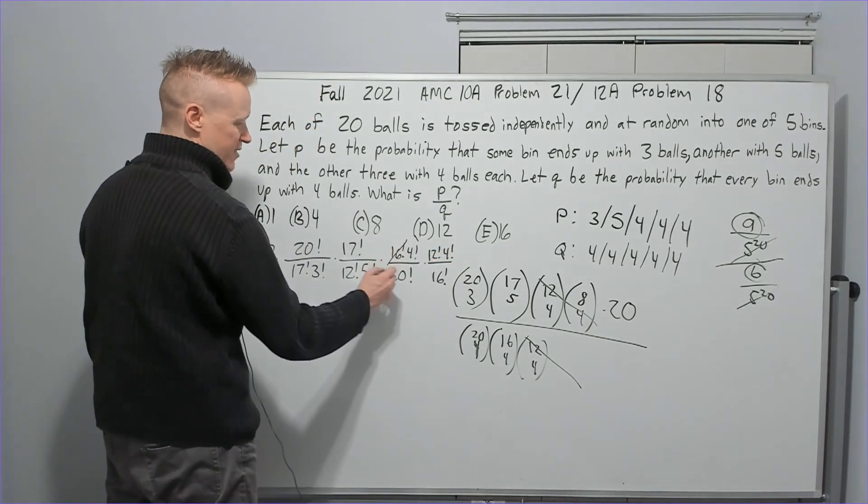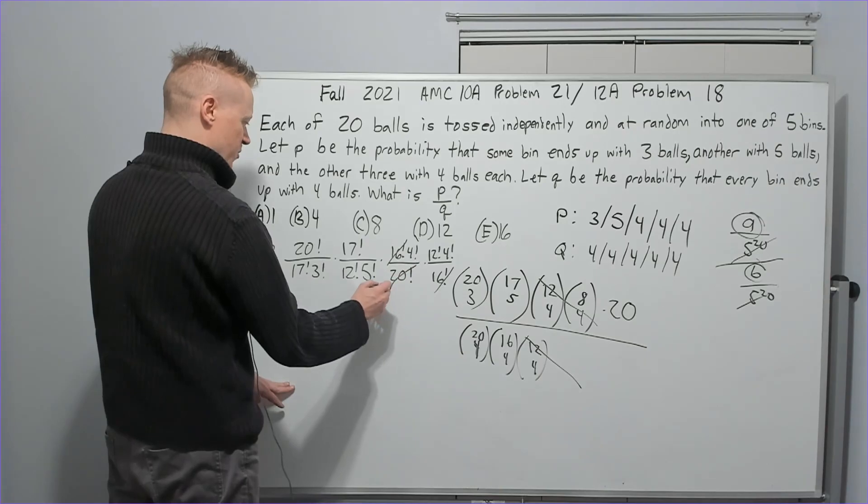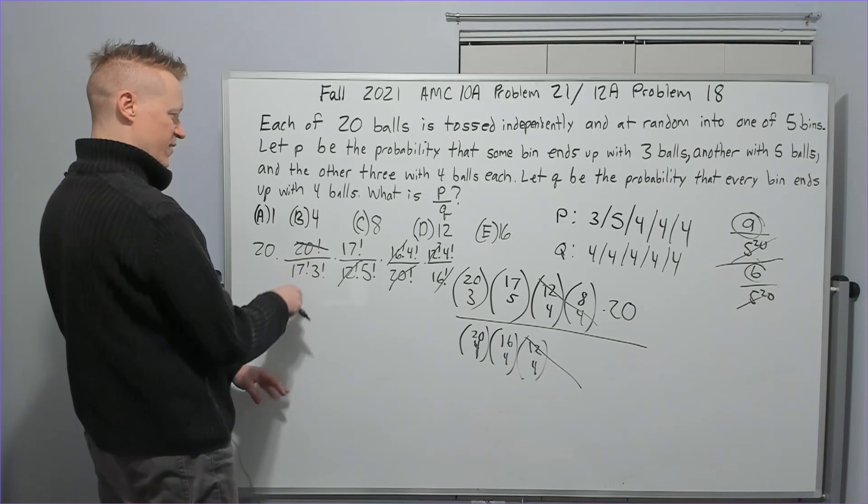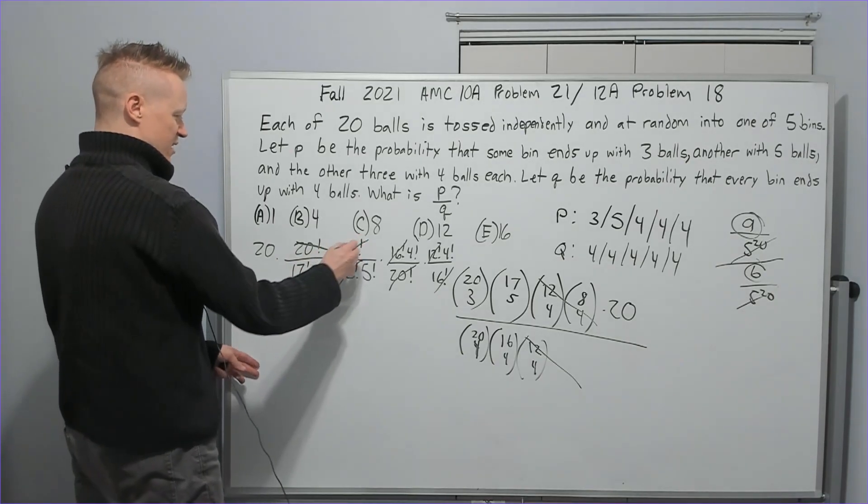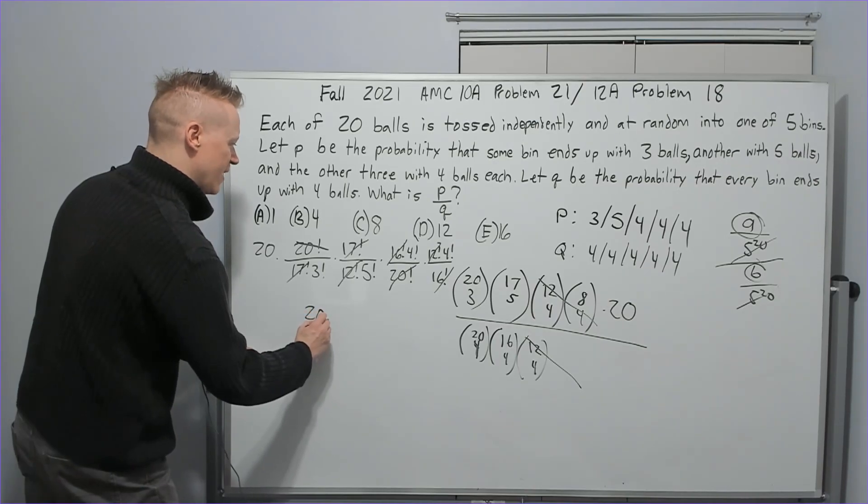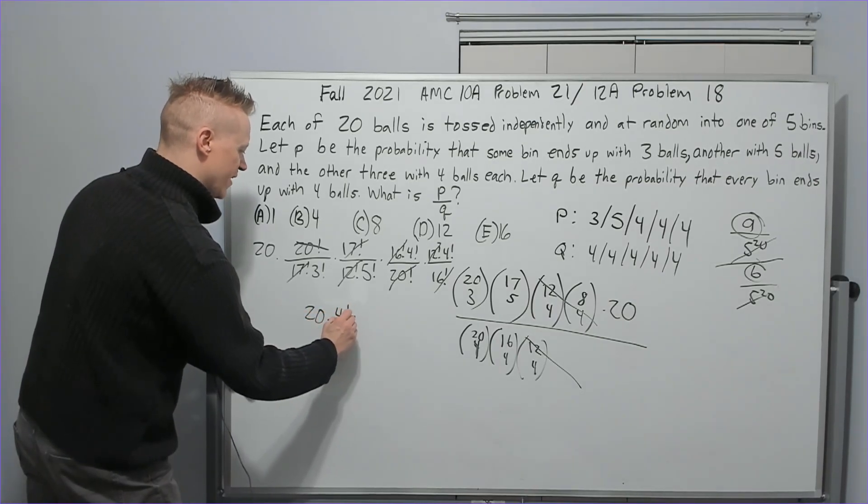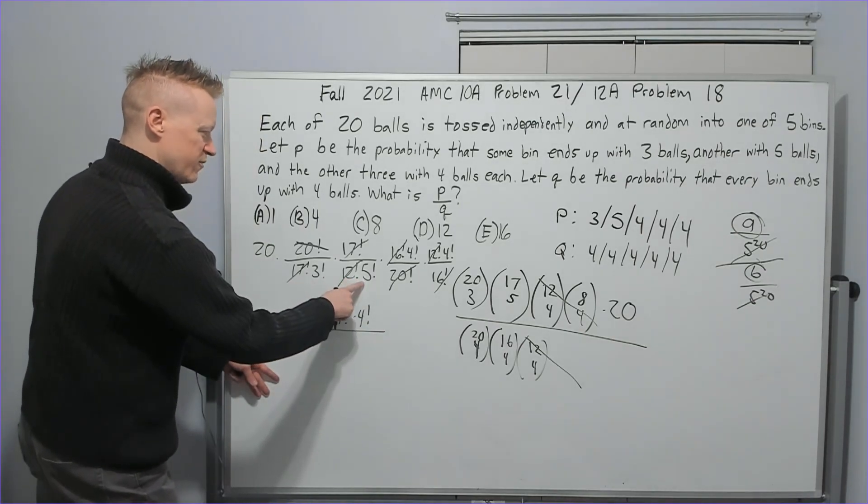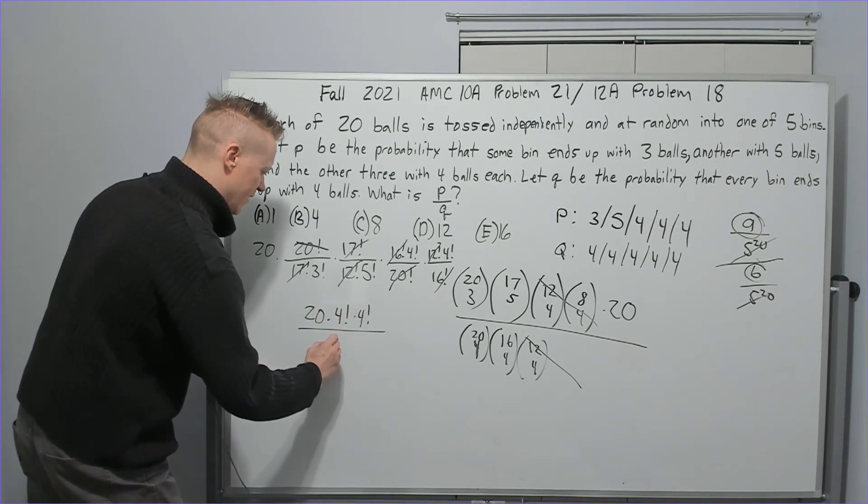Okay. Let's get started in canceling this with this, this with this 12 factorial, 12 factorial, 20 factorial, cancel the 20 factorial as well. 17 factorial. Everything's getting canceled. We've got 20 times 4 factorial, 4 factorial over 3 factorial, 5 factorial. That's all that's left there.